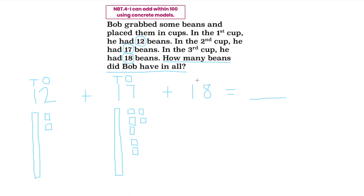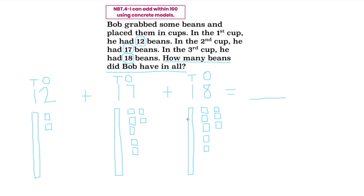My final addend is 18, also a two-digit number, so I label it with tens and ones. There is a one in the tens place, so I draw one base 10 rod. The eight is in the ones place, so I draw eight units: one, two, three, four, five, six, seven, eight. Now we have represented each of the numbers using concrete models — base 10 blocks.